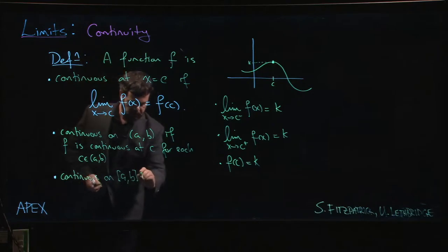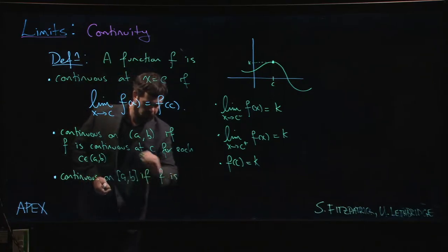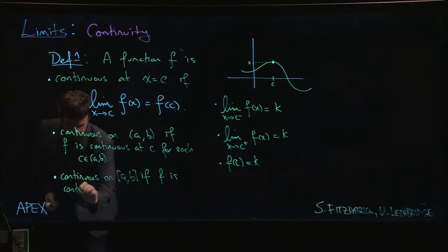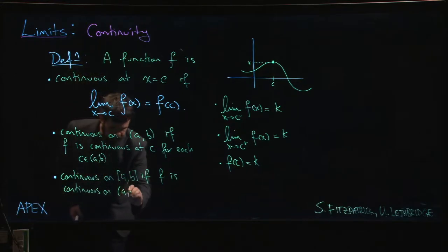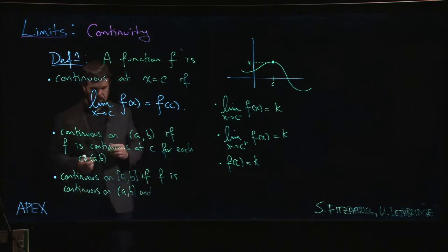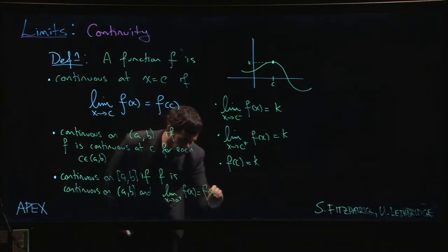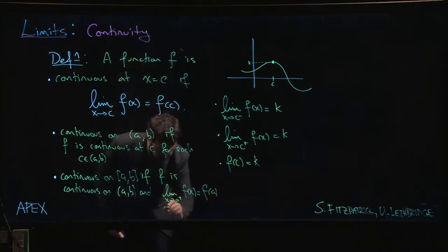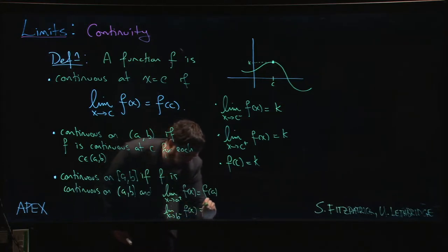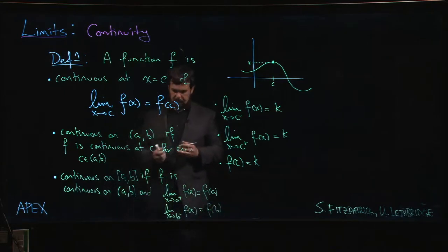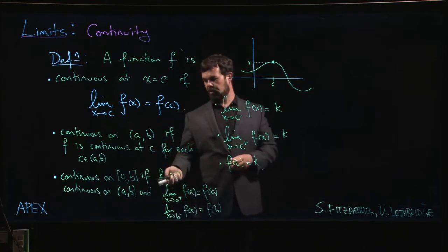So if we wanted to say what it means for a function to be continuous on a closed interval, well that means that first of all it has to be continuous on the open interval, and we need the limit as x approaches a from the right to equal f of a, and we need the limit as x approaches b from the left to equal f of b. So if you have all those things, then you could talk about a function being continuous on a closed interval.